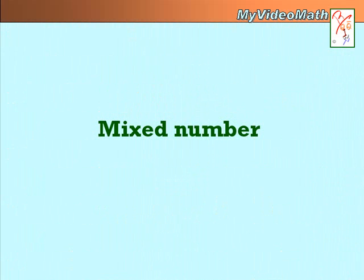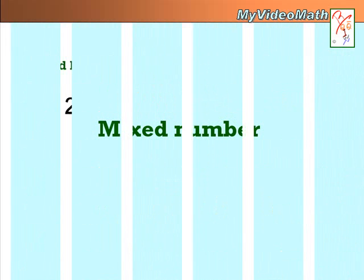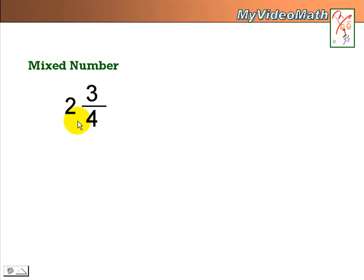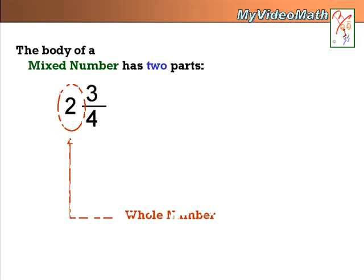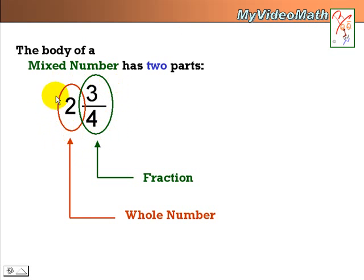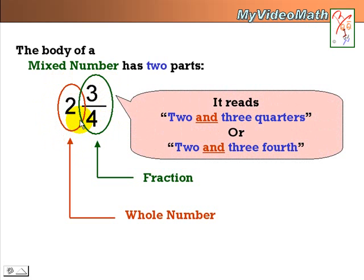First of all, we need to know what is a mixed number. A mixed number can look like this. In each mixed number, there are two parts: first of all, a whole number part, and second of all, a fraction. Together with the whole number and the fraction is called a mixed number. This particular mixed number reads two and three quarters or two and three fourths.